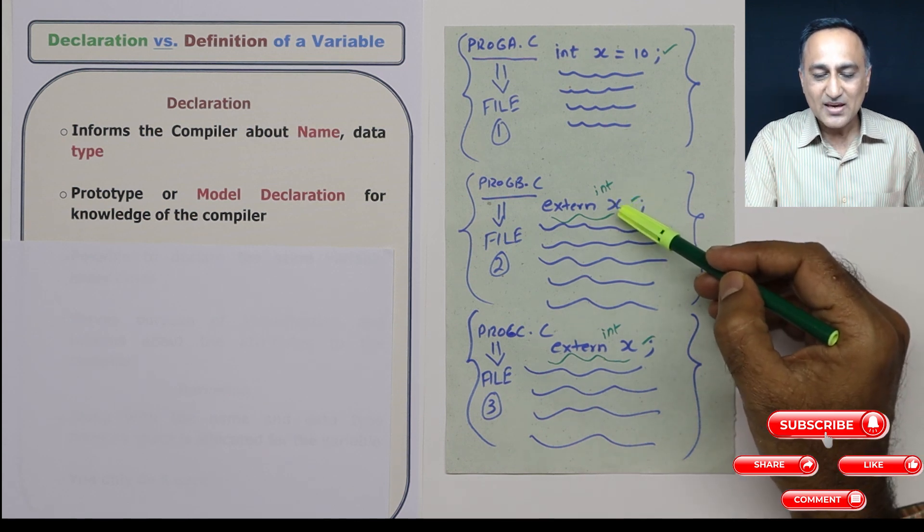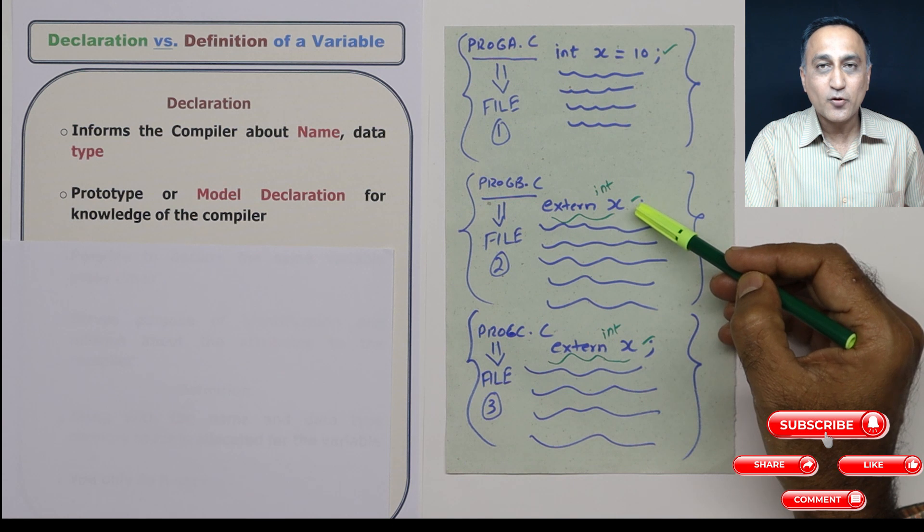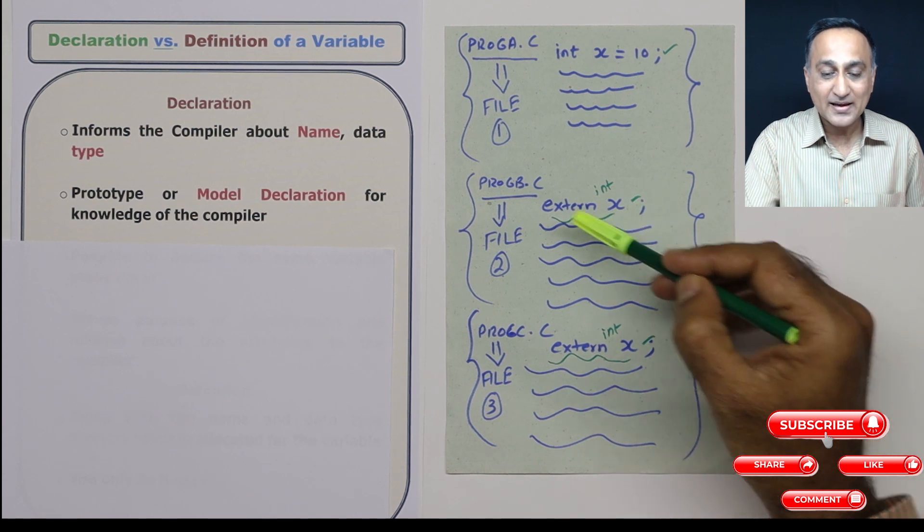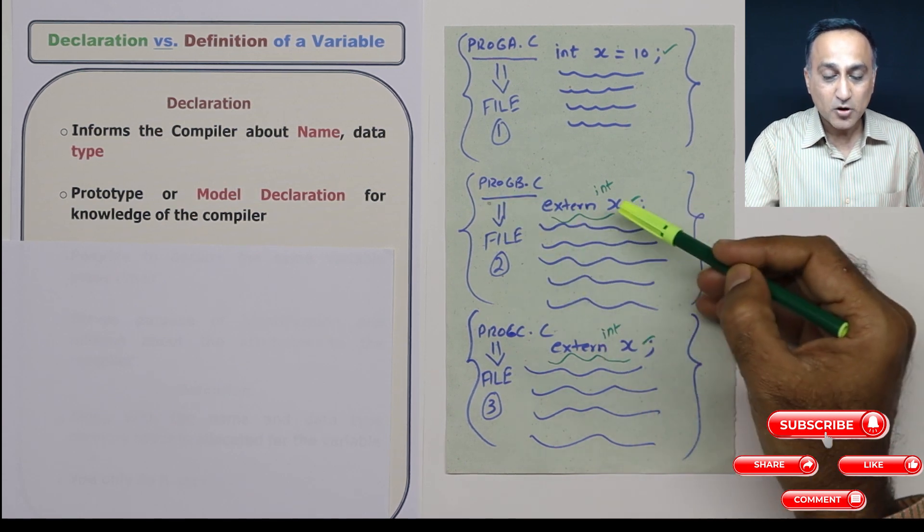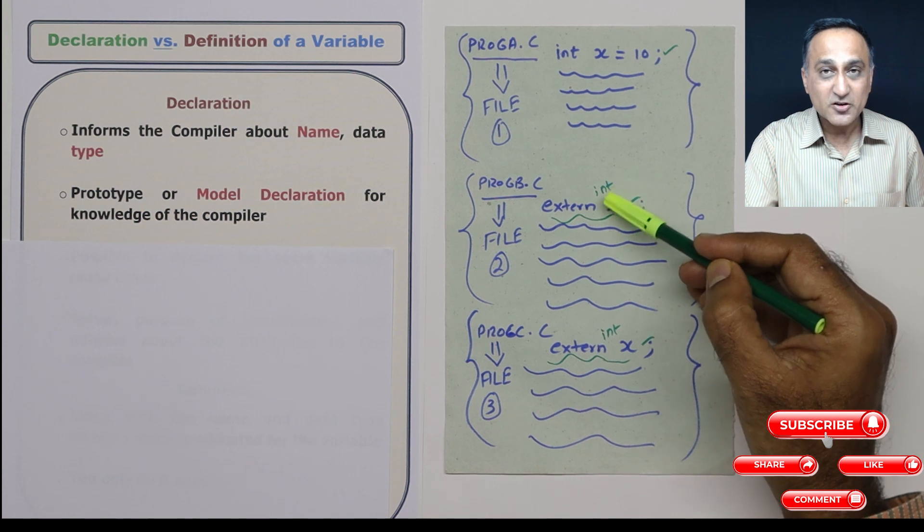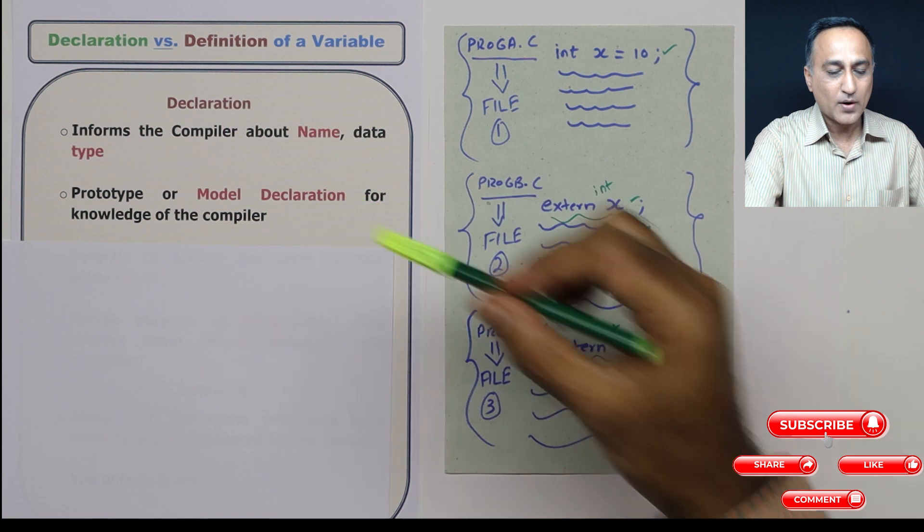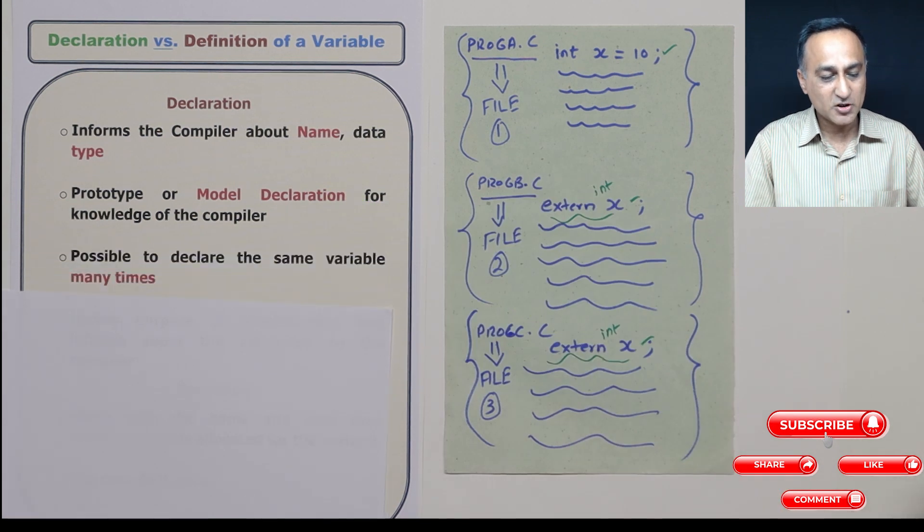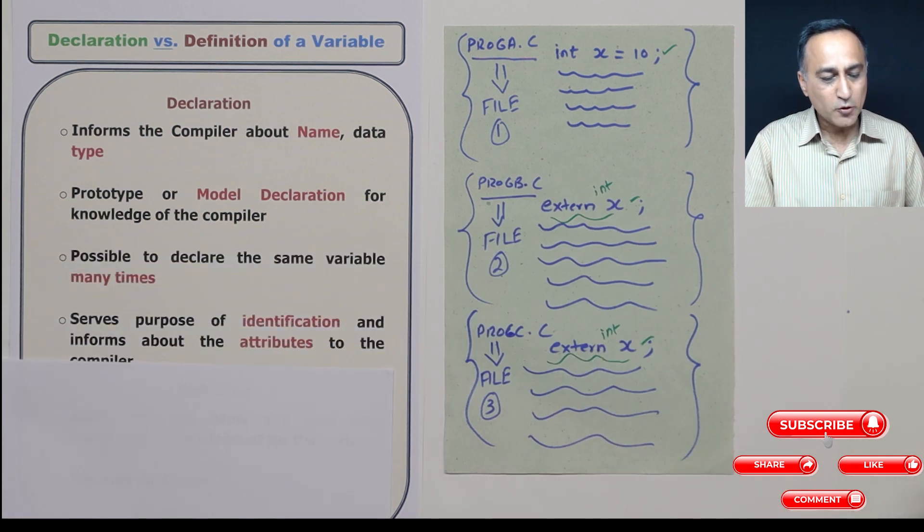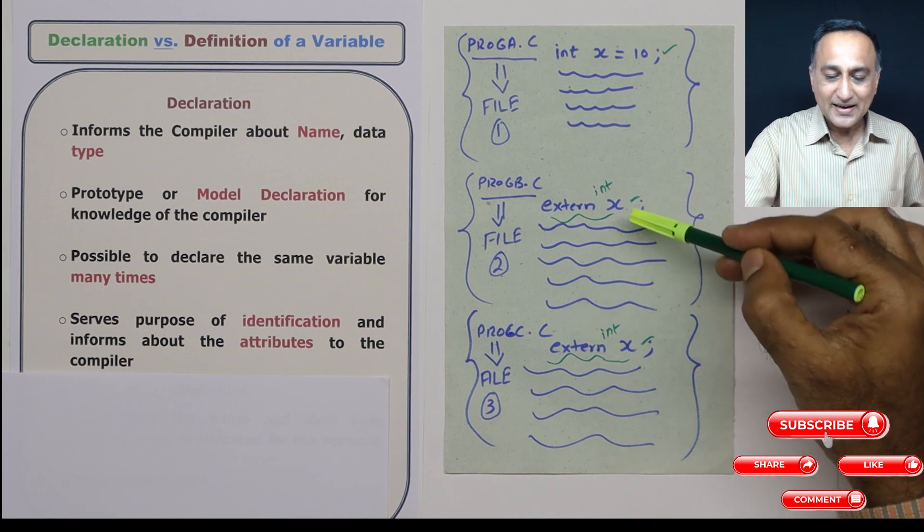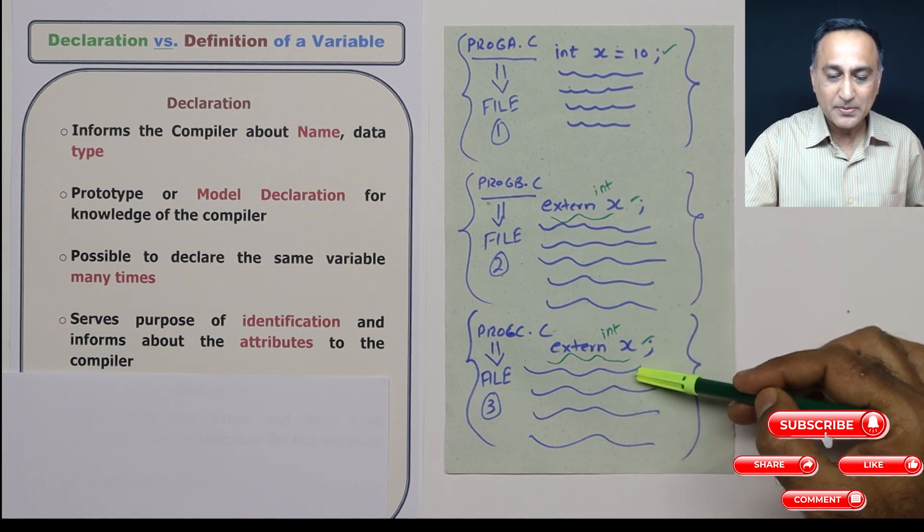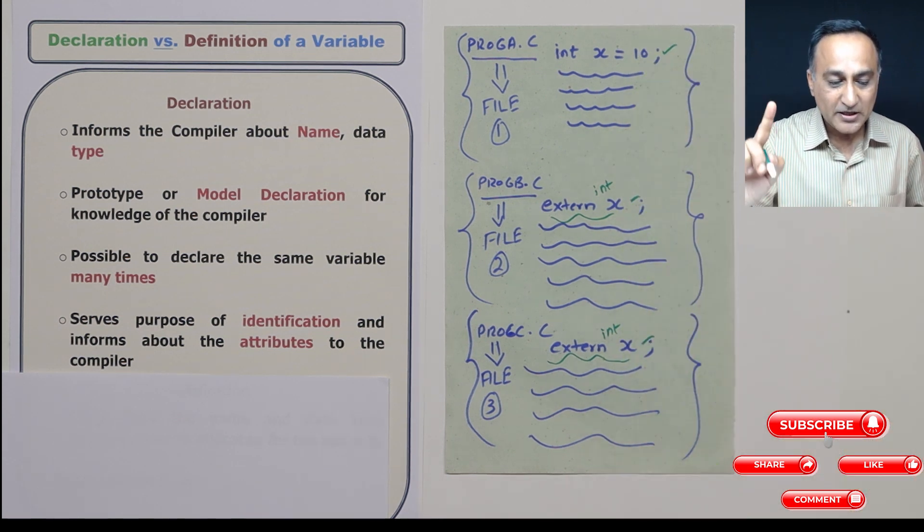Suppose you're giving x which is integer, trying to give a floating point value, the compiler will flag error when it is compiling this, because it knows x is integer. It should not accept a real number. So those kind of things are required. That's why you do a model declaration. I already told you earlier, you can declare this same variable multiple times, but you can define it only once.